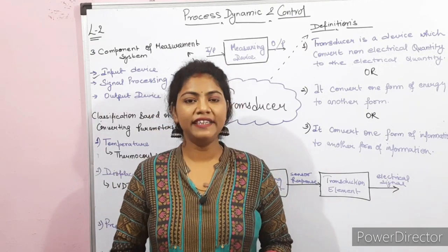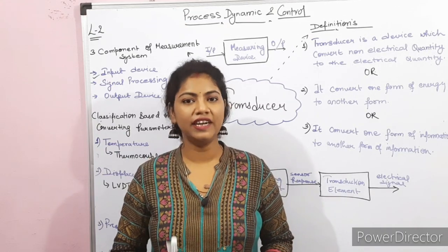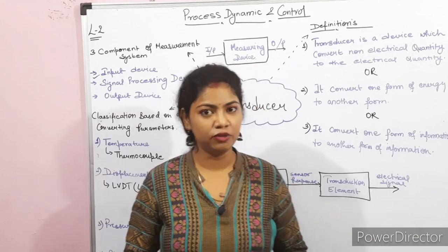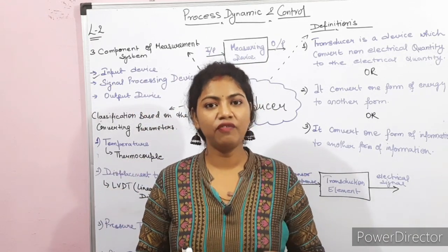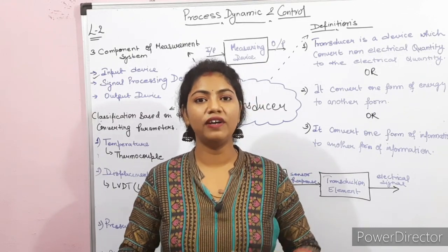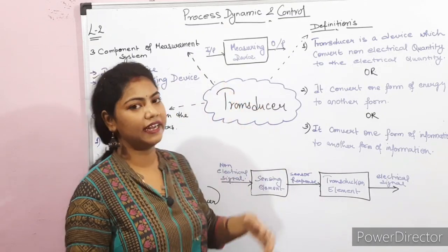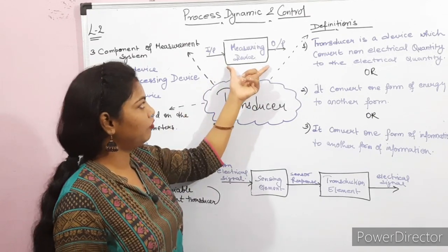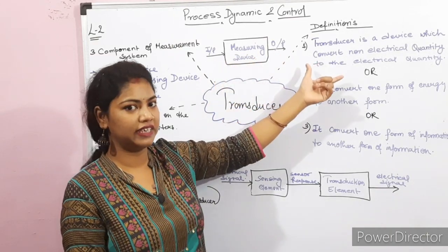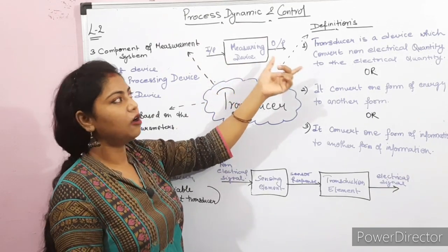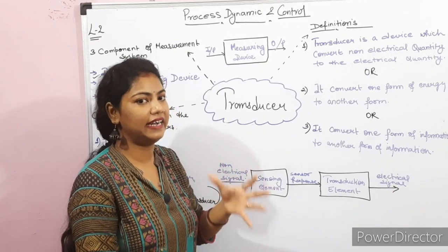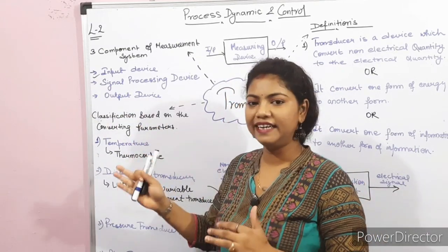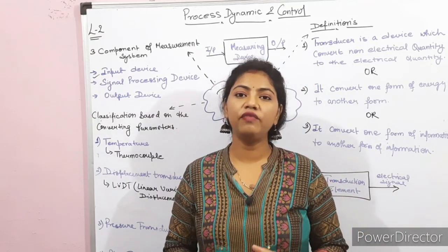Today's topic is Transducer Dynamics. The first question that arises is: what is a transducer? For your convenience, I have drawn a mind map for the transducer which covers all the details. First, we need to understand what a measuring device is and what its components are. The flow diagram of a measuring device consists of an input signal and an output signal, and it has three components: the input device, the signal processing device, and the output device.